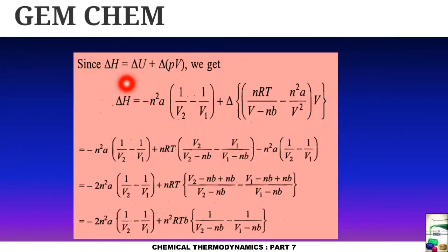Now delta H has an expression equals to delta U plus delta pV. And we have already known the value of delta U and delta pV. Here we have substituted the value of p and we have obtained this expression. Now this on being solved, we ultimately get the expression for delta H which is equals to minus 2 n square a multiplied by 1 by V2 minus 1 by V1 plus n square RTb multiplied by 1 by V2 minus nb minus 1 by V1 minus nb. So this is how it is derived for Van der Waals gas.